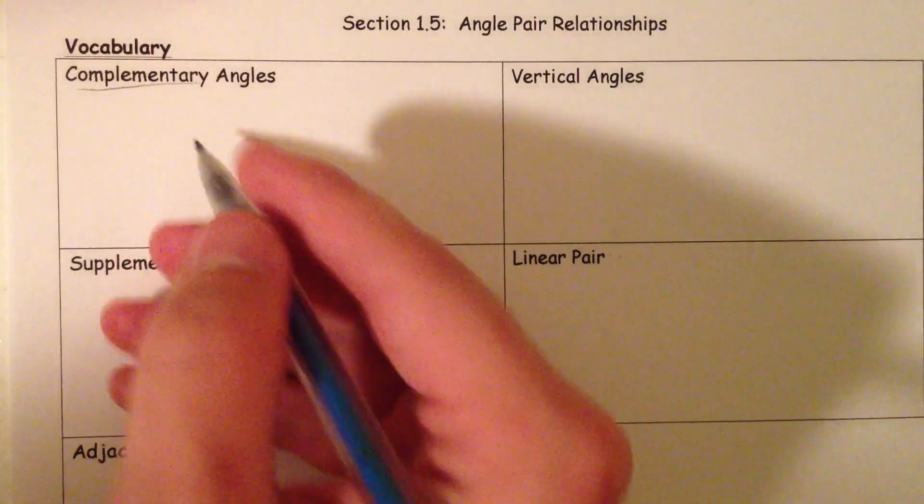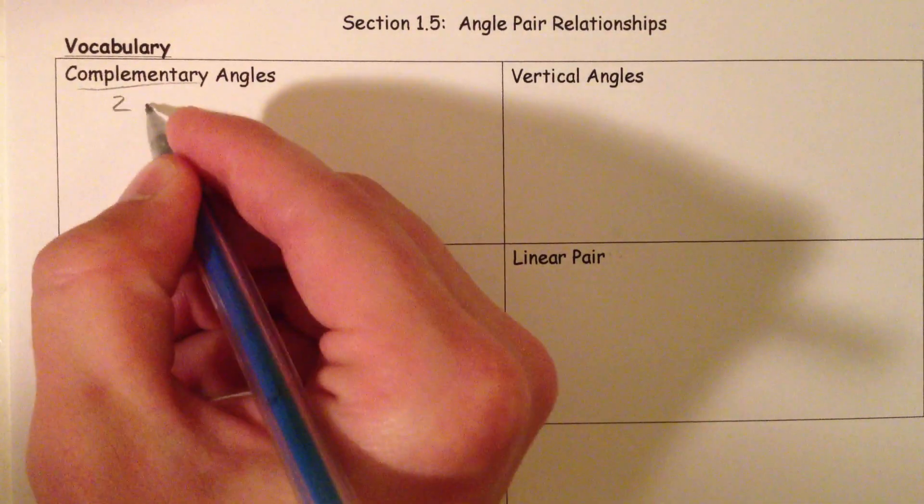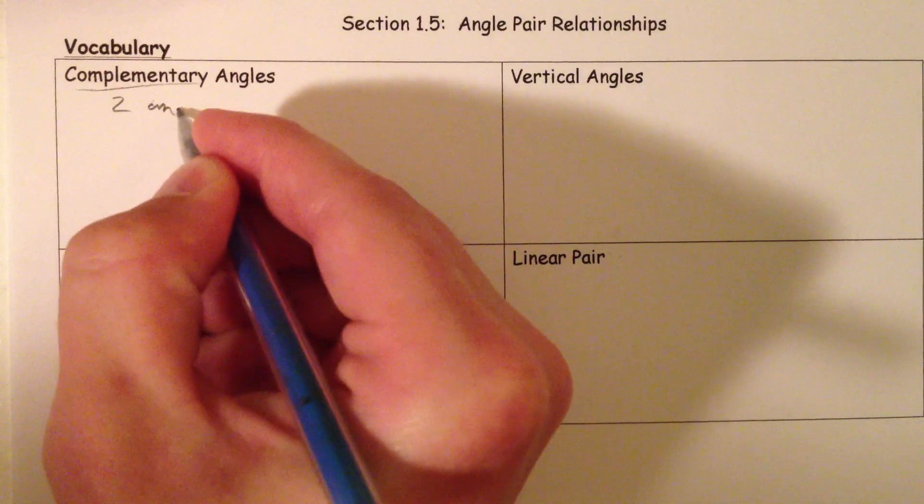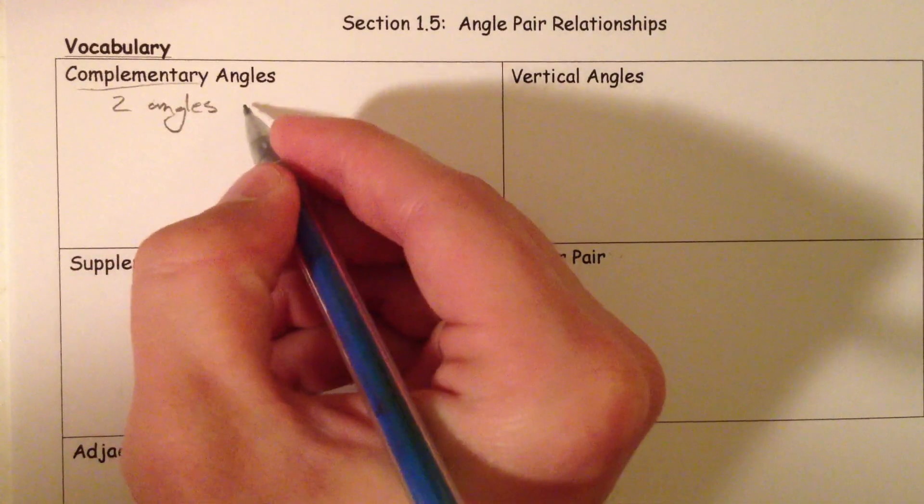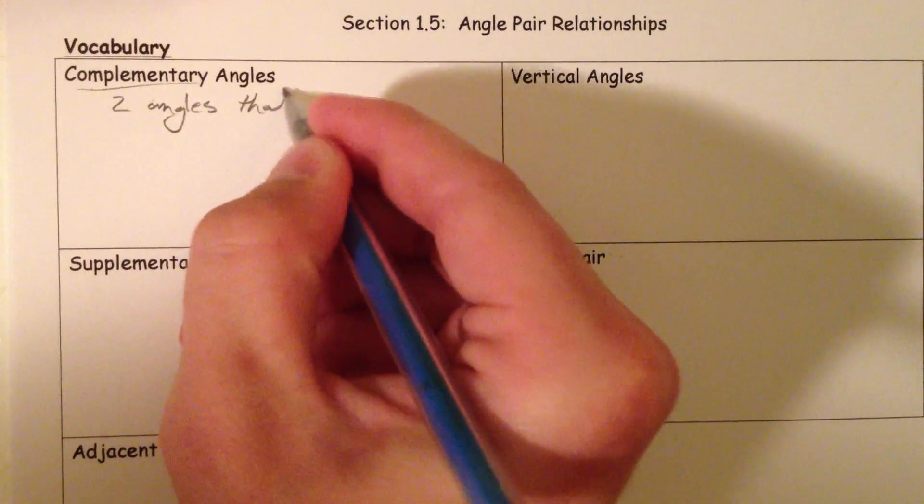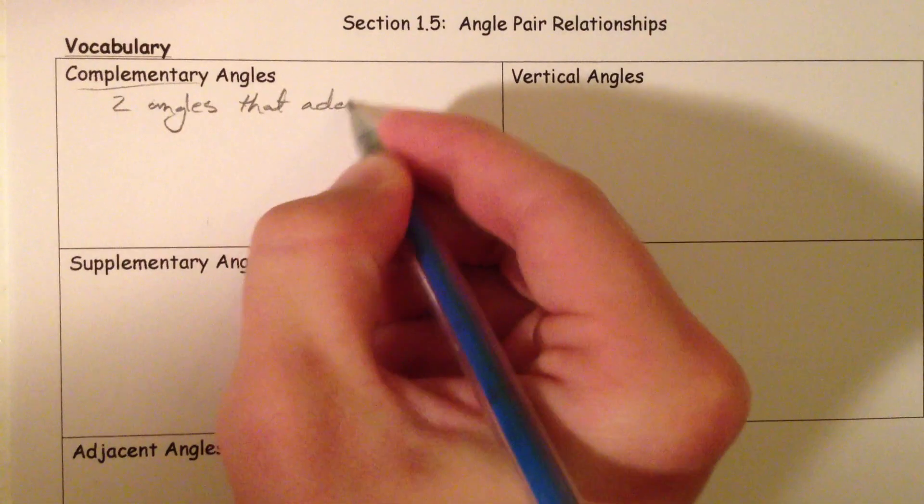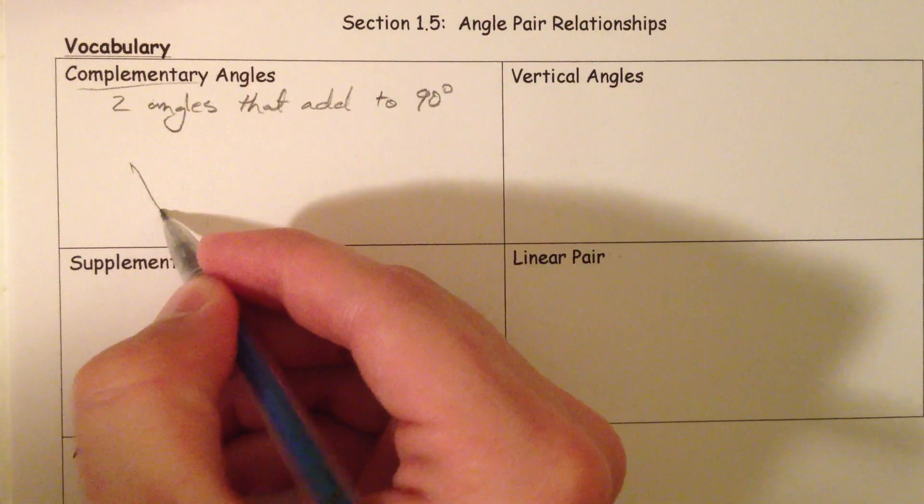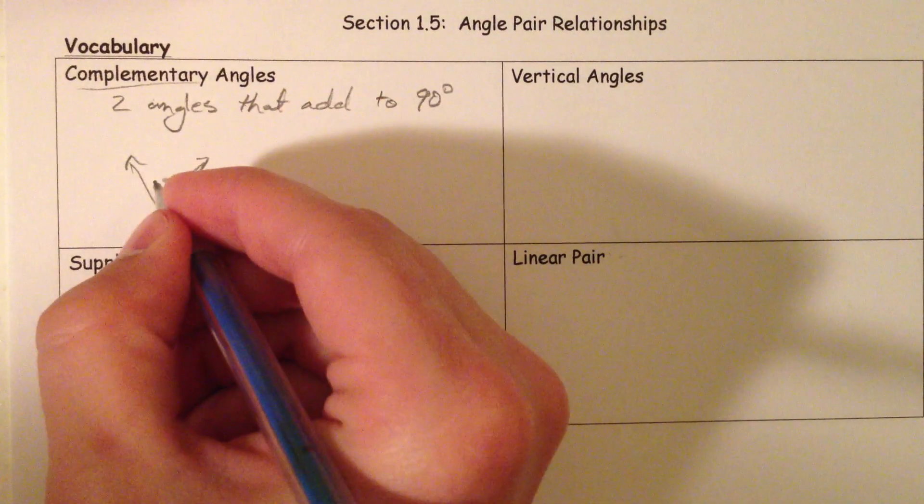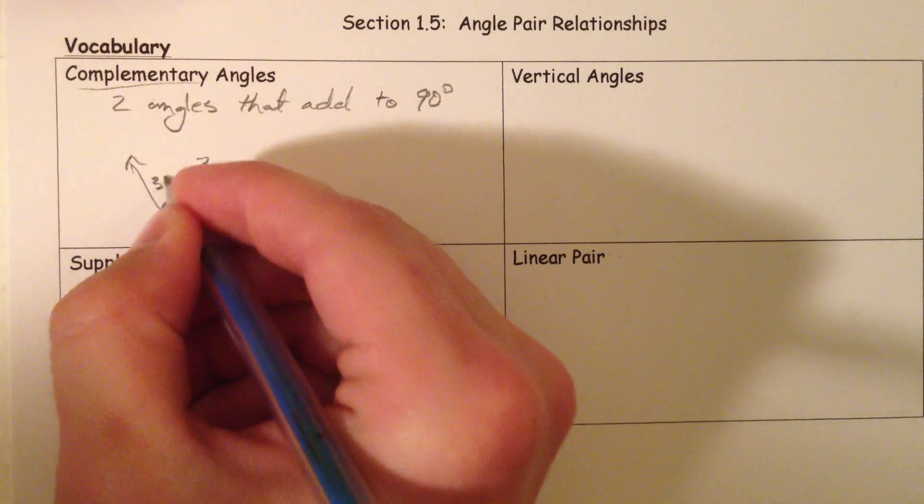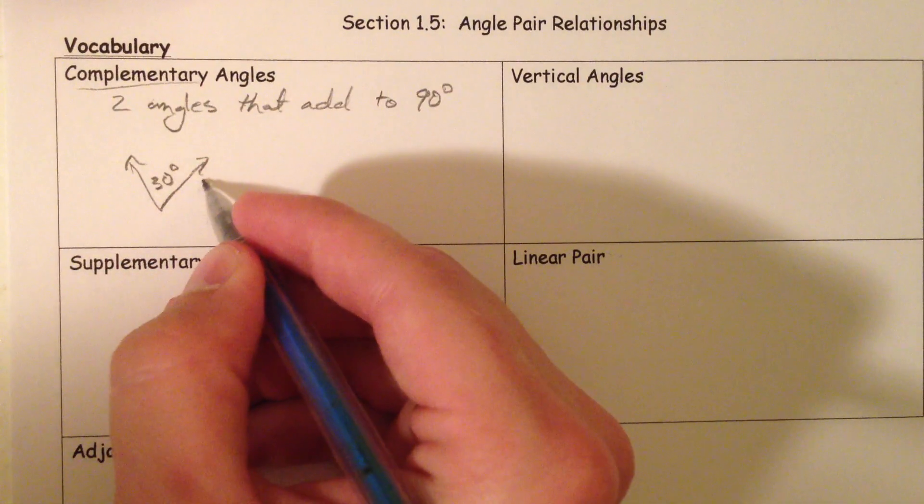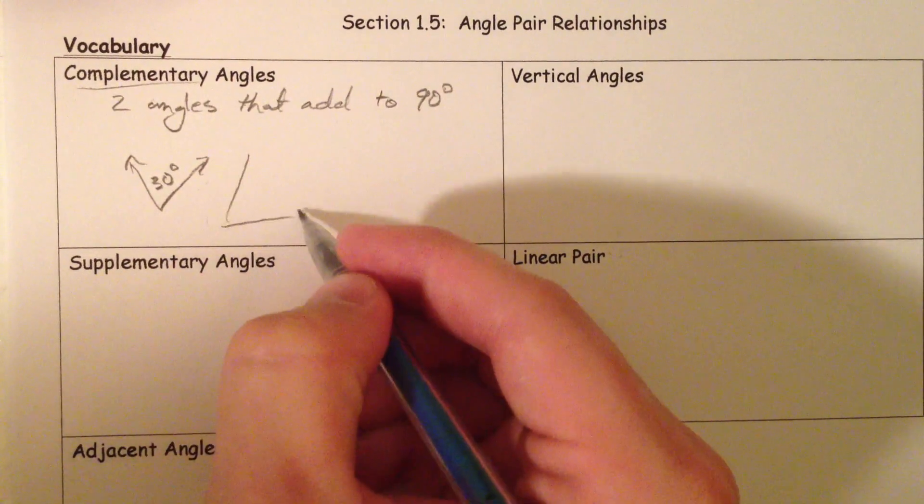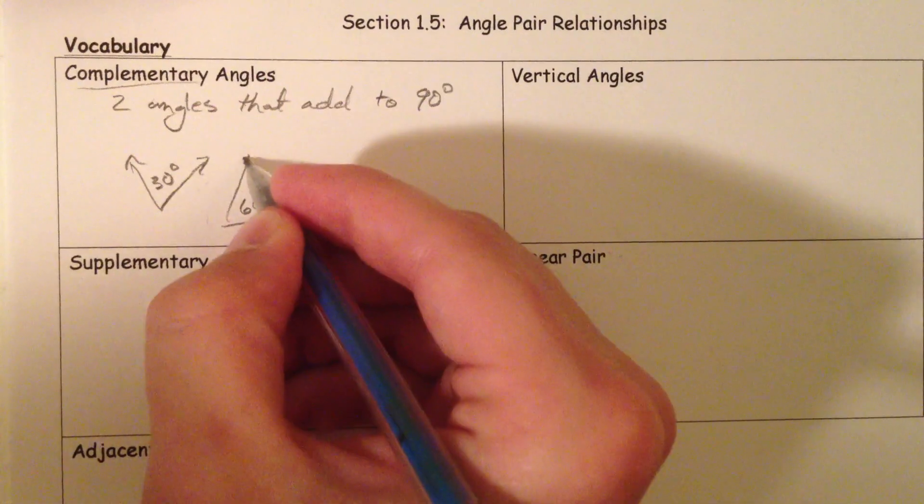Complementary angles. Complementary angles are two angles that add to 90. For example, you could have an angle that is 30 degrees and you could have an angle that is 60 degrees and together they make a 90 degree angle.